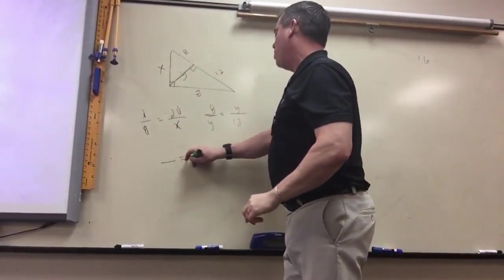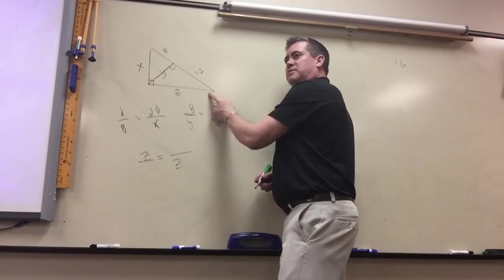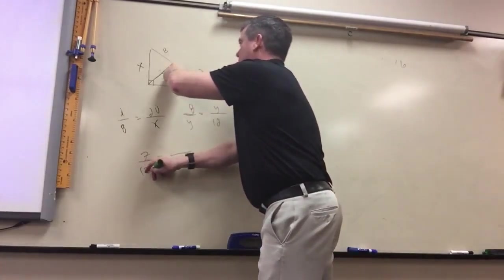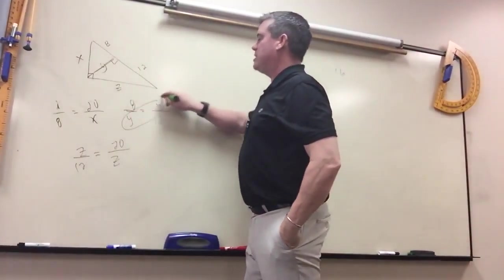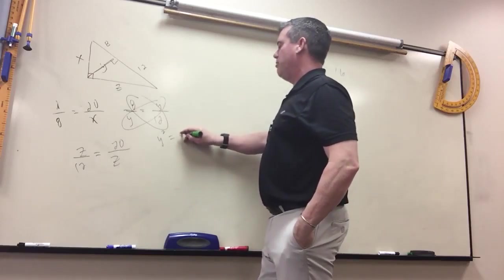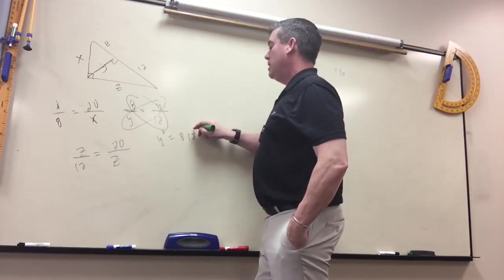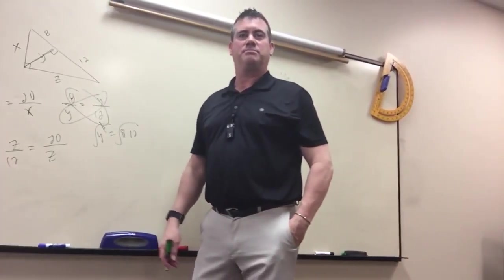So that one, z is a geometric mean. So when it's this length, you put what two numbers in there? 12 and the whole length, which is 20. So remember when you solve these, y times y is y squared equals 8 times 12, 96. And then you've got to square root it to figure out what y is.